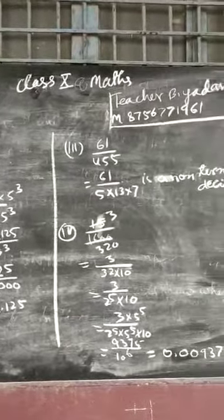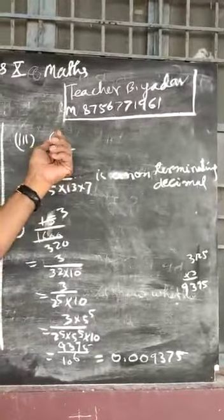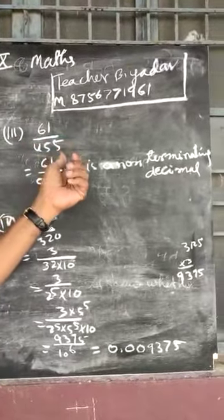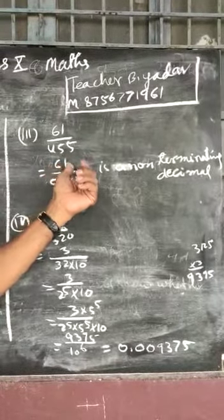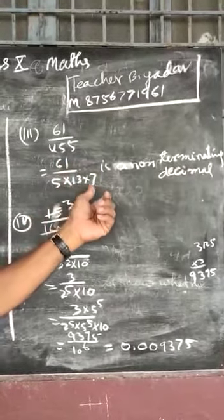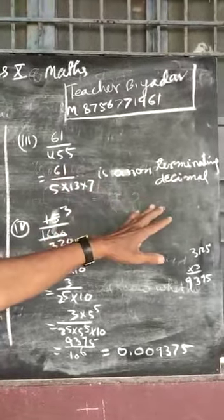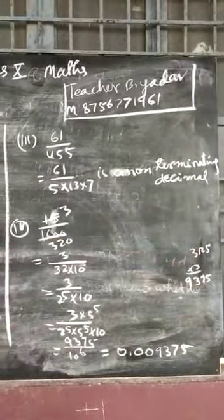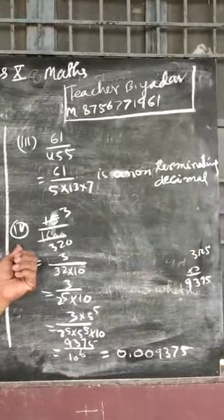Similarly, in part 3, it is 61 upon 455, which can be expressed as 61 upon 5 × 13 × 7. This is a non-terminating decimal, so no need to compute it. In part 4, 15 upon 1600 can be written as 3 upon 320.